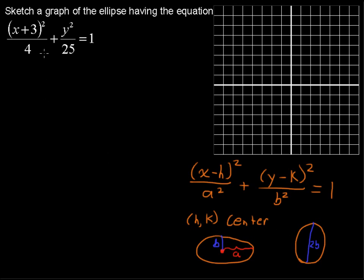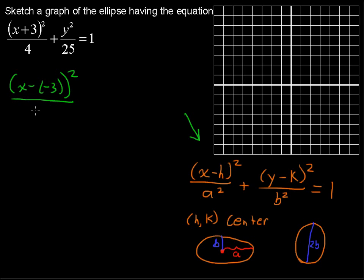Now I chose this example in particular because it takes just a little bit of manipulation to get it into standard form. X plus 3 needs to be written as x minus negative 3, because minus a negative 3 is the same as plus 3. In the denominator we have 2 squared so a is 2, and y minus 0 quantity squared over 5 squared, so b is 5. Equals 1.